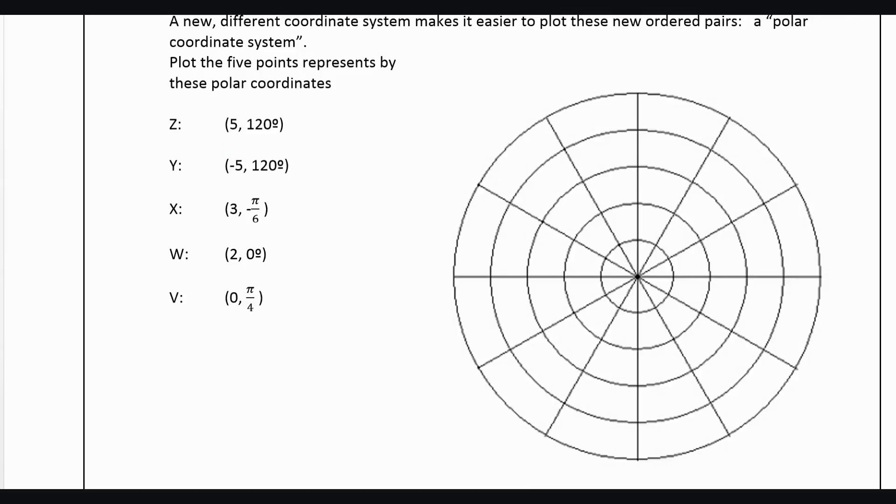So if we want to plot the point 5 and 120 degrees, we start at the origin and we go along the X axis. So we count out 5. And think of these, these are each a circle with radius 1, then 2, then 3, then 4, then 5. Then we're going to go counterclockwise 120 degrees. Now, these are each 30 degrees marked off. So this right here would be 120 degrees. So this is point Z.